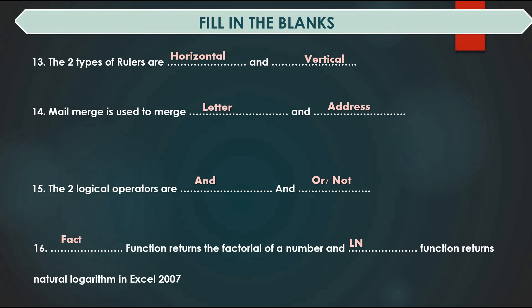Answers: Two types of rulers are horizontal and vertical. Mail merge is used to merge a letter and address. Logical operators are AND, OR, NOT. The FACT function returns factorial of a number and the LN function returns the natural logarithm.